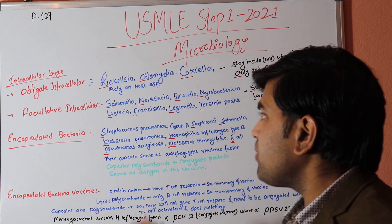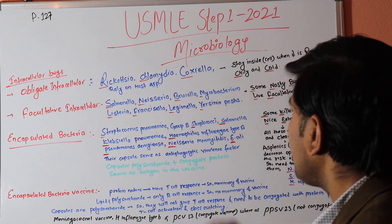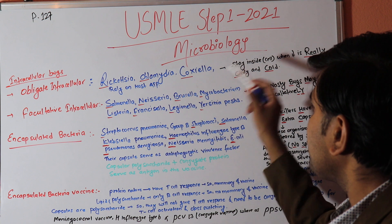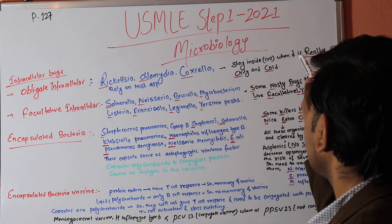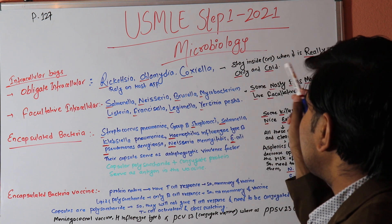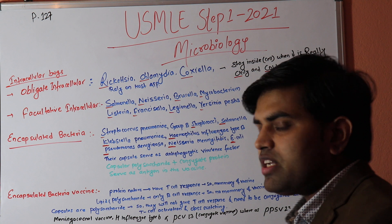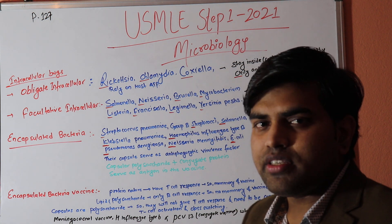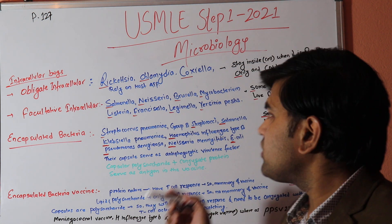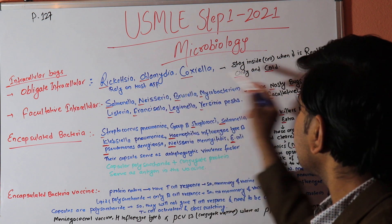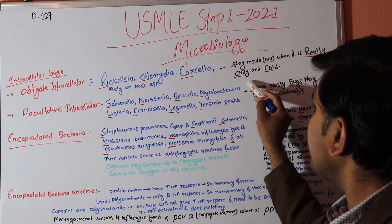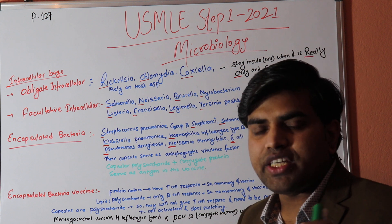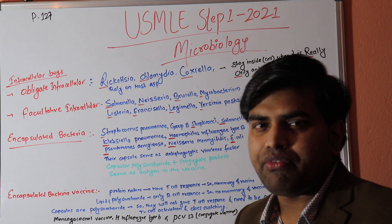Their names are Rickettsia, Chlamydia, and Coxiella. To remember them, there is a formula from First Aid: 'You stay inside when it is Really Chilly and Cold.' So 'Really' = Rickettsia, 'Chilly' = Chlamydia, and 'Cold' = Coxiella. These are the obligate intracellular parasites you must remember.